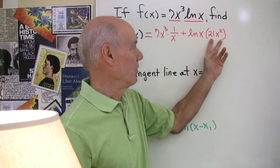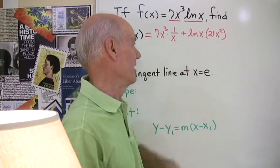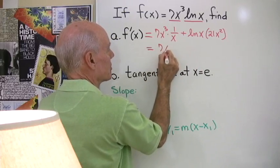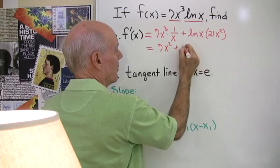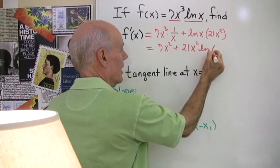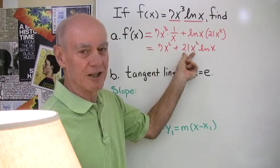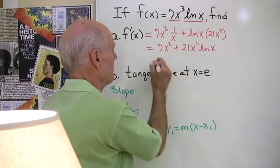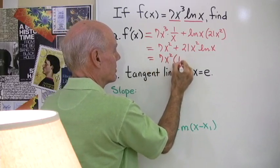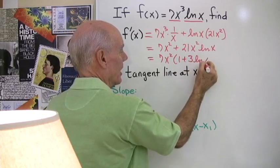Now this 21x² is multiplied times this whole function not just times x right here. So I can simplify that a little bit: 7x² + 21x²ln(x). And I guess I can simplify a little further. Let's take a 7x² out of each term. I'll factor that out 7x². What's left is 1 + 3ln(x).